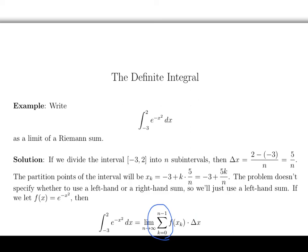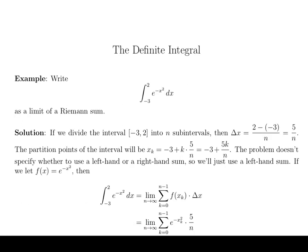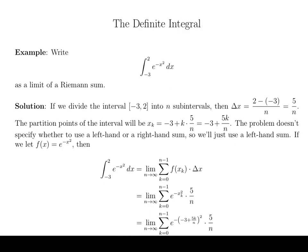Okay, so now we'll plug everything in. And so f of xk is just e to the minus x sub k squared and the delta x is 5 over n. And now I'm just going to plug in the thing that we had computed earlier for x sub k. And we end up with this sum.